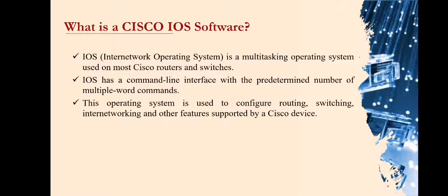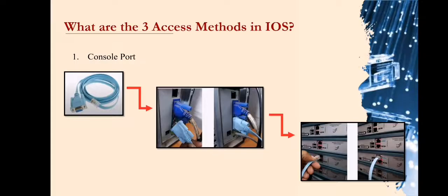CLI, or command line interface — if you do not know what a command line interface is, you have probably seen the command line in Windows, so it looks similar. This operating system is used to configure routing, switching, inter-networking, and other feature software by Cisco devices. We now go to the three methods of IOS.